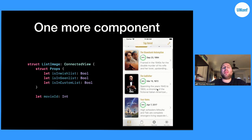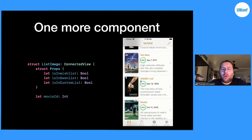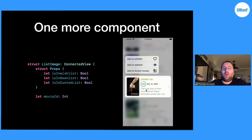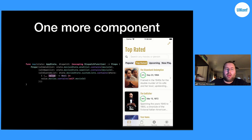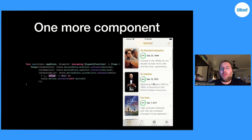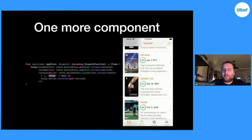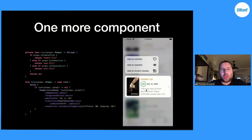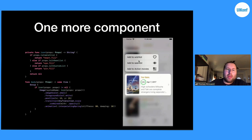Let's look at one more component, a bit more complex. We are looking at the list image — whenever you click the context menu to add a movie to one of your lists (wishlist, seen list, or any custom list), we display a little icon on the top left of the poster. So we have our ListImage with three props: whether it's in the wishlist, the seen list, or a custom list. We just need the movie ID from the parent. We have the context menu, then in mapStateToProps we extract from our state whether the movie is in the wishlist, the seen list, or any custom list. In the body, you can pass props to another function — you can really break your view into small functions — and with these props we calculate which icon to show depending on which list the movie is in.